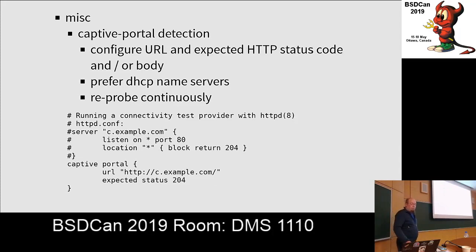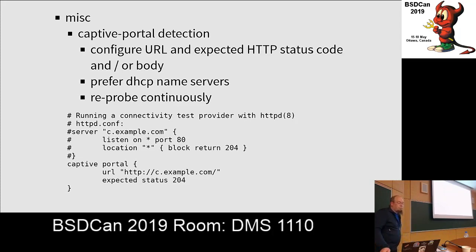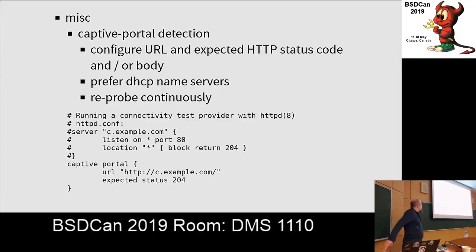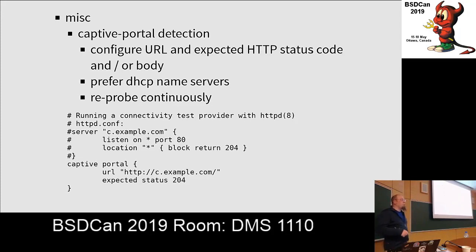Captive portal detection works by configuring a URL and sending a GET request, expecting a particular HTTP status code, status code plus body, or just a body. If we get an answer that is not expected — or maybe we get a timeout — we decide we're behind a captive portal. That short-circuits the decision process to always choose only the DHCP-provided resolvers, no matter how terrible they are, because that's what we need to get past this. In the background, it continuously reprobes to figure out when someone has actually clicked 'yes I agree to the terms of service,' meaning you're now past the portal.